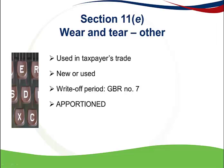It's very important to know this allowance is apportioned. This means that if you only use the asset for a number of months during the year, you can only claim it for that number of months. Small items that are capital assets of less than 7,000 Rand can be claimed in full in the year of purchase — these do not need to be apportioned or to apply General Binding Ruling number 7.